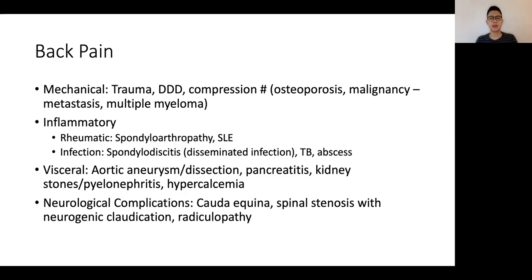TB spine is also something to think about, and epidural abscesses can happen too. Don't forget that there are viscerogenic causes of back pain, which include the aorta — aortic aneurysm, aortic dissection — pancreatitis, kidney problems like stones and pyelonephritis, and systemic disorders like hypercalcemia. Primary spinal pathologies can also cause neurological complications, and it is important to subtype these as to whether it's a cauda equina picture, neurogenic claudication from spinal stenosis, or a sciatica/radiculopathy pattern.